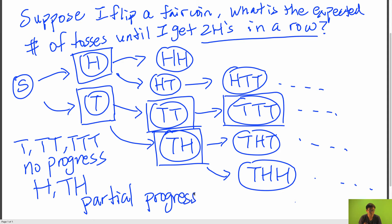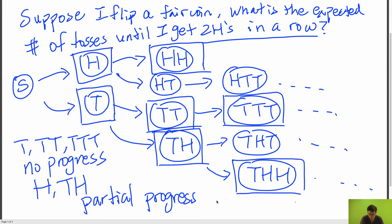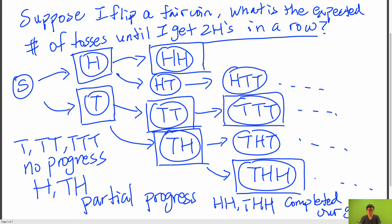We're almost there — we just need one more heads, but not quite. And then if you look at heads-heads and tails-heads-heads, these represent that we completed our goal. So essentially we can break down our states into three different categories: no progress, partial progress, and complete progress. Let's try to do that instead.